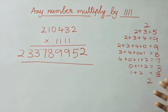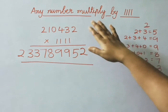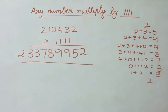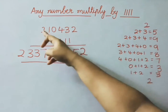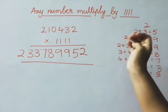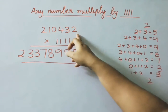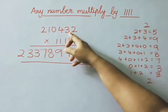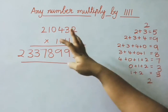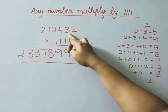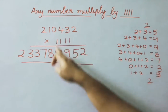Once again I am explaining this sum. The given number we are going to multiply by 4 ones, that is 1111. Write down the first digit and the last digit as it is. Then add 2 digits. Next 3 digits we must add: 2 plus 3 is 5. Then add 4 digits from right to left: 2 plus 3 is 5, 5 plus 4 is 9, 9 plus 0 is 9.